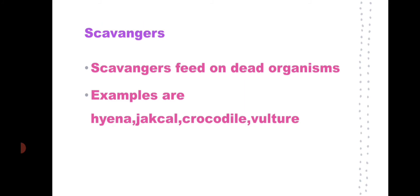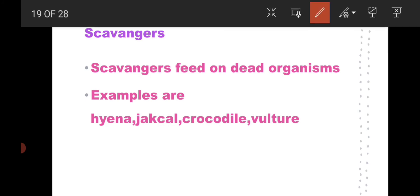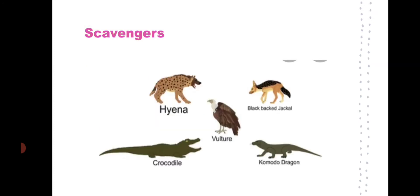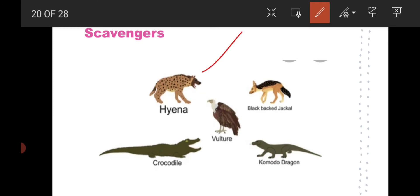Scavengers are organisms that feed on dead organisms. Examples of scavengers include hyena, jackal, crocodile, vulture, and komodo dragon. They feed on dead organisms. Even the crow is also a scavenger — it feeds on dead organic matter.